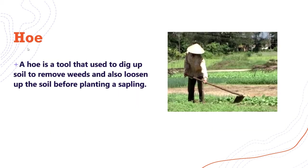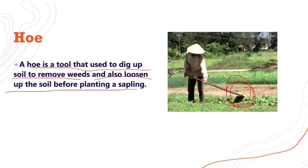A hoe is a tool used to dig up the soil, remove the weeds, and loosen up the soil before planting a sapling. In this diagram you can see that this farmer is removing all the weeds from the field by using the hoe.